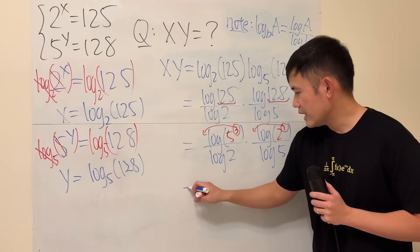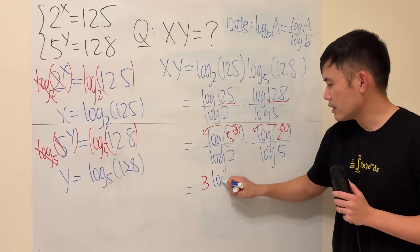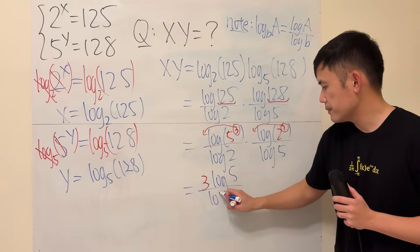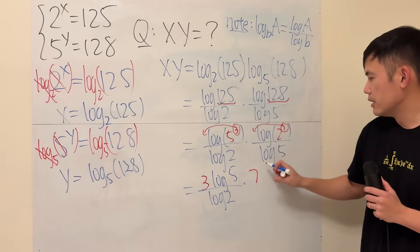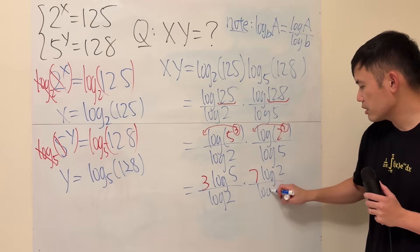So you will see that this is equal to 3 in the front now, times log of the base 5 over log 2. And then times, this right here, 7 in the front now, times log 2 over log 5.